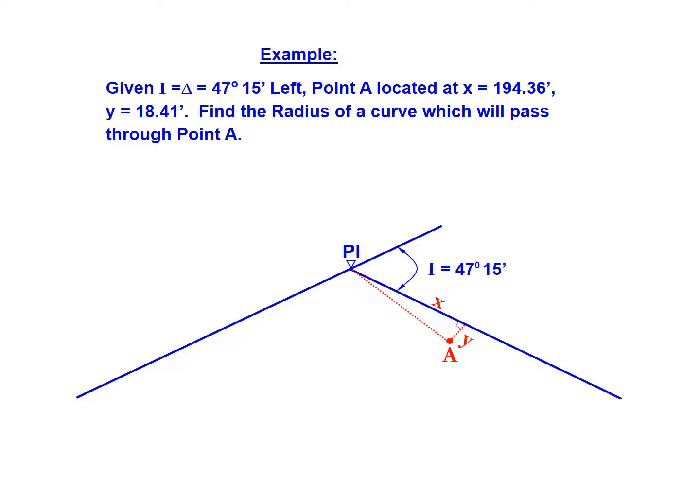You have point A which we're going to try and fit the curve through, and this is located at a distance along the tangent of 194.36 feet and then perpendicular to the tangent at that point of 18.41 feet. That's known as x and y. We're asked to find the radius of the curve that will fit through that fixed point A.